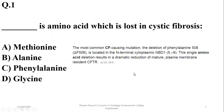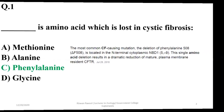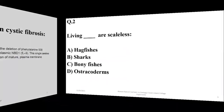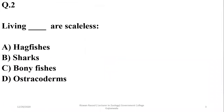Question 1: The amino acid which is lost in cystic fibrosis is phenylalanine, which is lost during mutation of cystic fibrosis. So the right option is C. Question 2: Scaleless fishes are hagfishes, so the right option is A. Sharks possess placoid scales and bony fishes have different types of other scales.